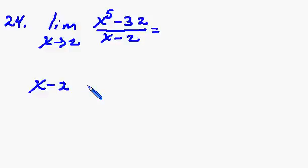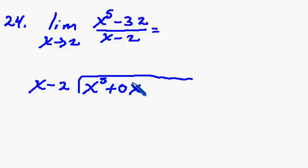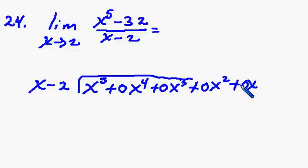So you set this up as x minus 2, dividing it into x to the 5th minus 32. Remember, when doing division, we have to put in some placeholders here. Like 0x to the 4th plus 0x to the 3rd plus 0x squared plus 0x and then minus 32. Alright, trying to be neat here. It's not exactly being neat. I'm writing on these pads.